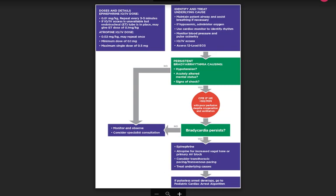Going through the algorithm one more time: identify and treat underlying causes, maintain a patent airway, and assist breathing if necessary. If hypoxemic, administer oxygen. Use a cardiac monitor to identify rhythm, monitor blood pressure and pulse oximetry, and establish IO/IV access and assess a 12-lead ECG. If persistent bradyarrhythmia is causing hypotension, acutely altered mental status, or signs of shock, begin CPR if the heart rate is less than 60 beats per minute with poor perfusion despite oxygenation and ventilation. If those symptoms do not exist, monitor and observe and consider specialist consultation.